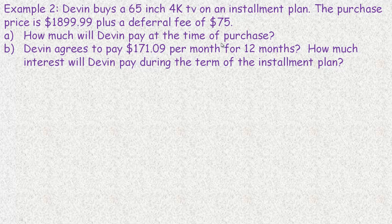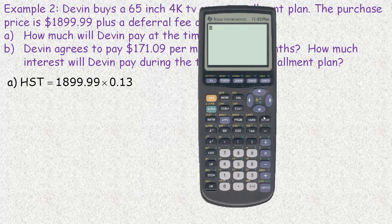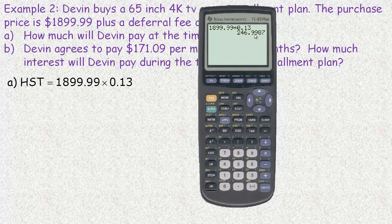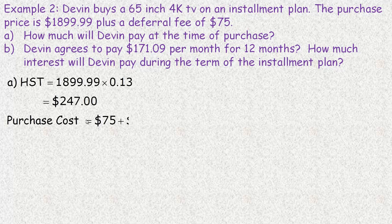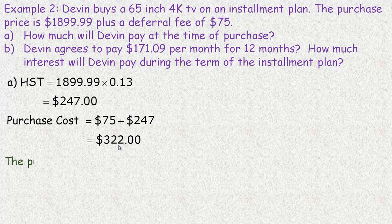Part A asks how much Devin will pay at the time of purchase. Similar to the previous example, we calculate the tax by taking the purchase price of $1,899.99 and multiplying by 0.13. Because of the $0.99, the result rounds up, giving us $247.00 for the HST amount. He then pays that plus the $75 deferral fee, so we add those together and get $322. So at the time of purchase, he's going to pay $322.